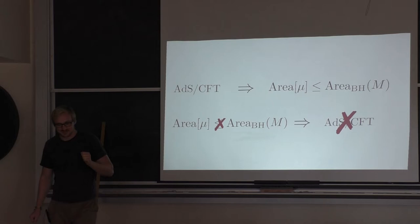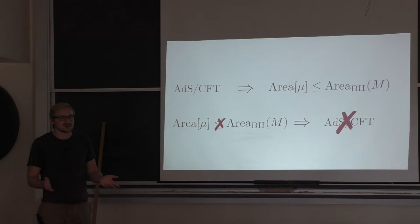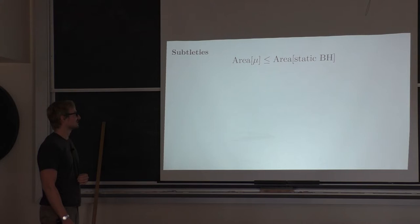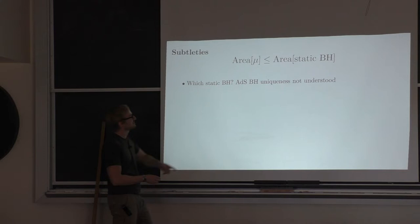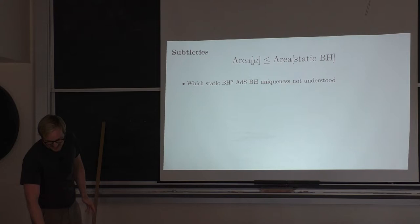In this talk I'm going to look for violations of this inequality. But there's a problem: we don't understand black hole uniqueness in AdS very well. Which static black hole do I plug into this inequality? How can I test it when I don't even know what the inequality says precisely?